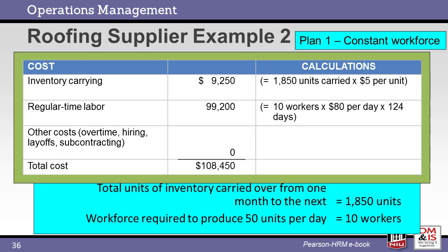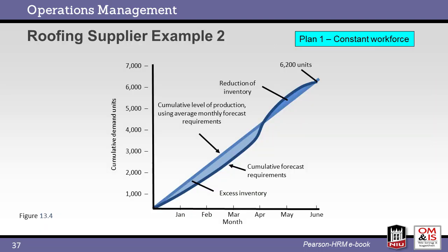First, we calculate the inventory carrying costs at $5 per unit. Then we calculate our labor costs for 10 workers at $80 per day over 124 days. Based upon these calculations, we find a total cost of $108,450. This graph shows the results of this analysis — note that the inventory increases until April and then decreases to zero in June.